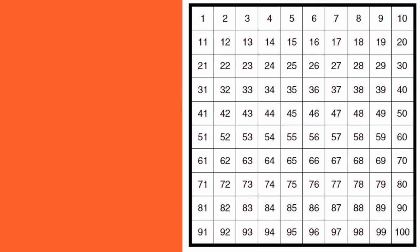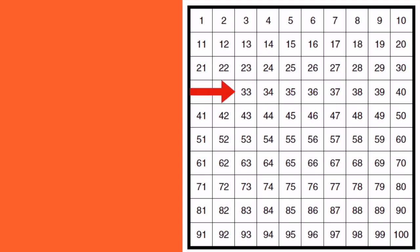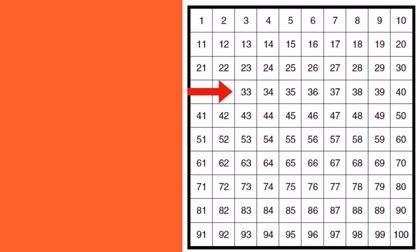I notice that moving right, the numbers increase by one each time. Moving left, the numbers decrease by one each time. Moving down, the numbers increase by ten each time. Moving up, they decrease by ten each time.